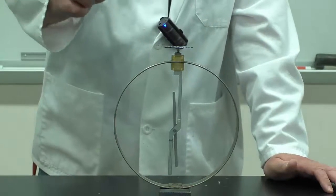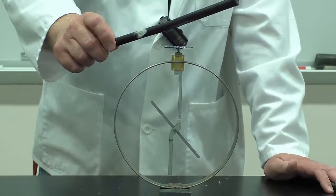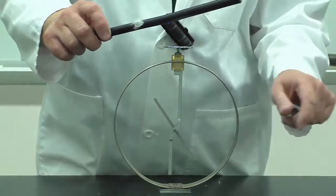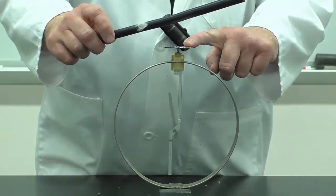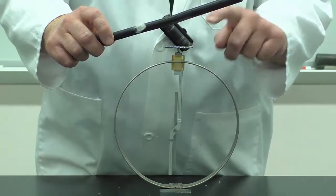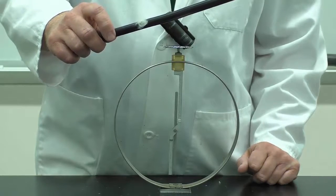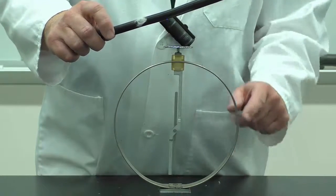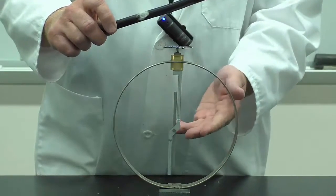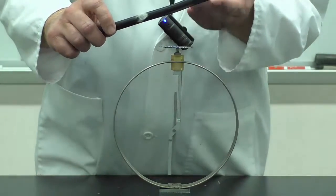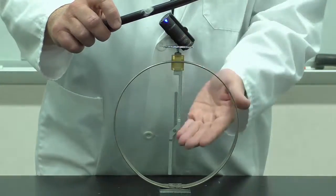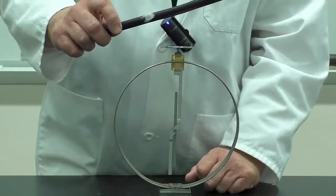I can actually charge the electroscope through induction. If I bring the rod nearby and then touch the plate, bring my hand away, now the rod is negatively charged, the electroscope is positively charged, and all those positive charges are trying to come to the top and attract to the rod. So the needle is in its original position.